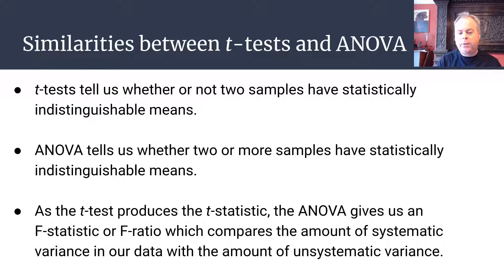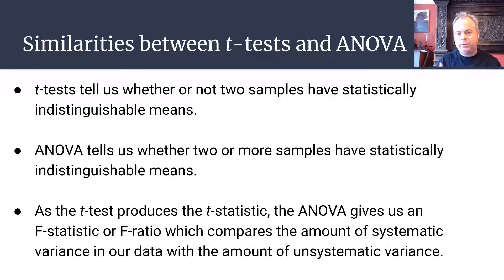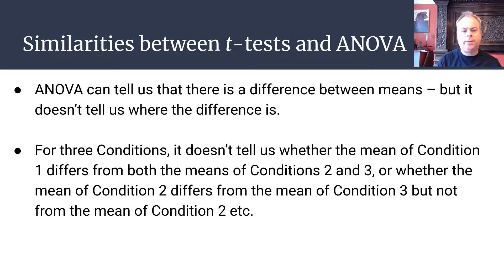The F-ratio is a nice, interpretable ratio in its own right. If the F-ratio increases, that means there's more systematic variance in our data — variance caused as a result of our experimental manipulation, which we're capturing in our model — relative to the amount of unsystematic variance.